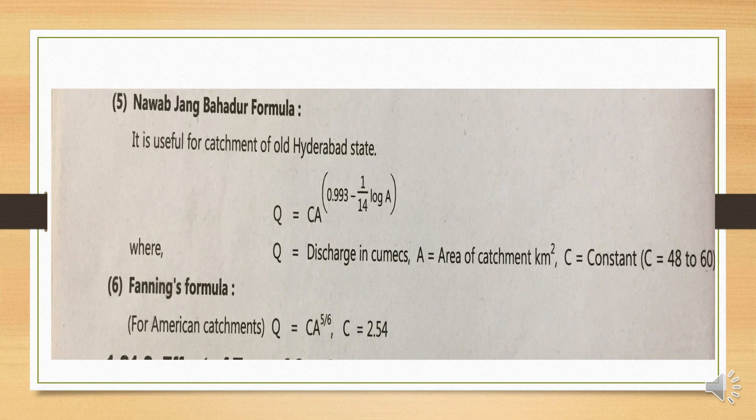The last formula is Fanning's formula, specially for American catchment. The formula is: Q = C × A^(5/6), where C is a constant equal to 2.54. So these are the total five empirical formulas for calculating maximum flood discharge.